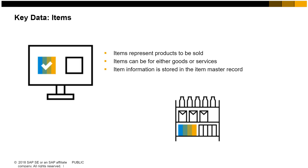Besides the business partner, another key piece of data entered in the sales order is item data. Items represent products to be sold, either goods or services. Like customer master data, item information is stored in master data records. Services you sell can also be set up as item master data records.